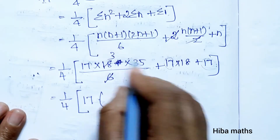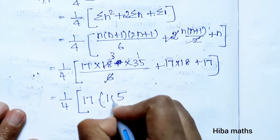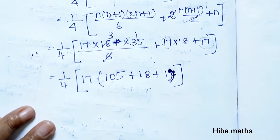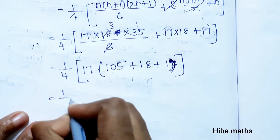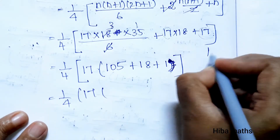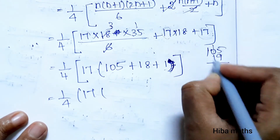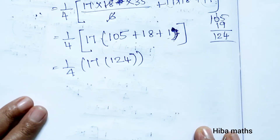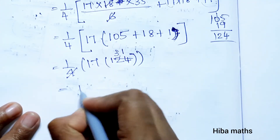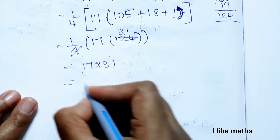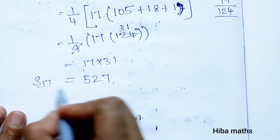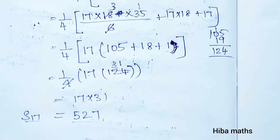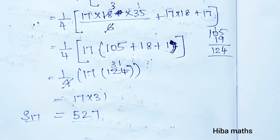Simplifying step by step: 17×18×35/6 + 17×18 + 17. Factoring out 17 gives 17 × [18×35/6 + 18 + 1] = 17 × [105 + 18 + 1] = 17 × 124. Dividing by 4: 17 × 31 = 527. So S of 17 = 527. Thank you so much for watching.